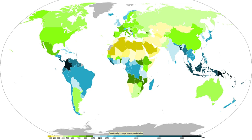Moisture that is lifted or forced to rise over a layer of sub-freezing air at the surface may be condensed into clouds and rain. This process is typically active when freezing rain occurs. A stationary front is often present near the area of freezing rain and serves as the focus for forcing and rising air. Provided necessary atmospheric moisture, the rising air will condense into clouds, namely stratus and cumulonimbus.